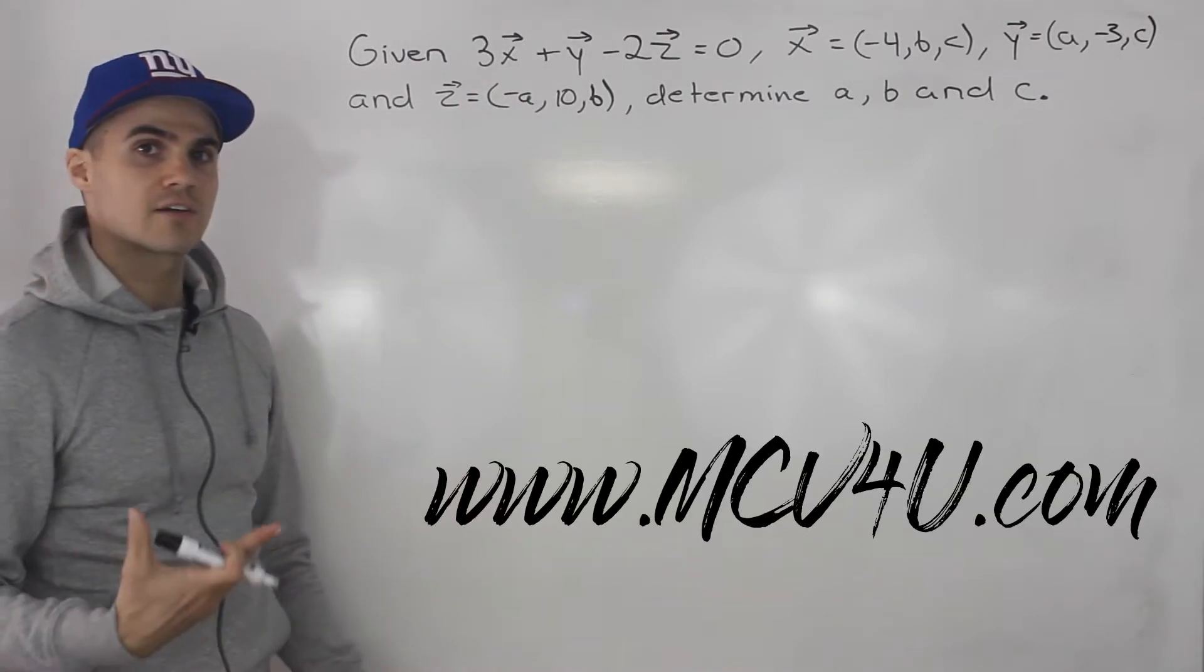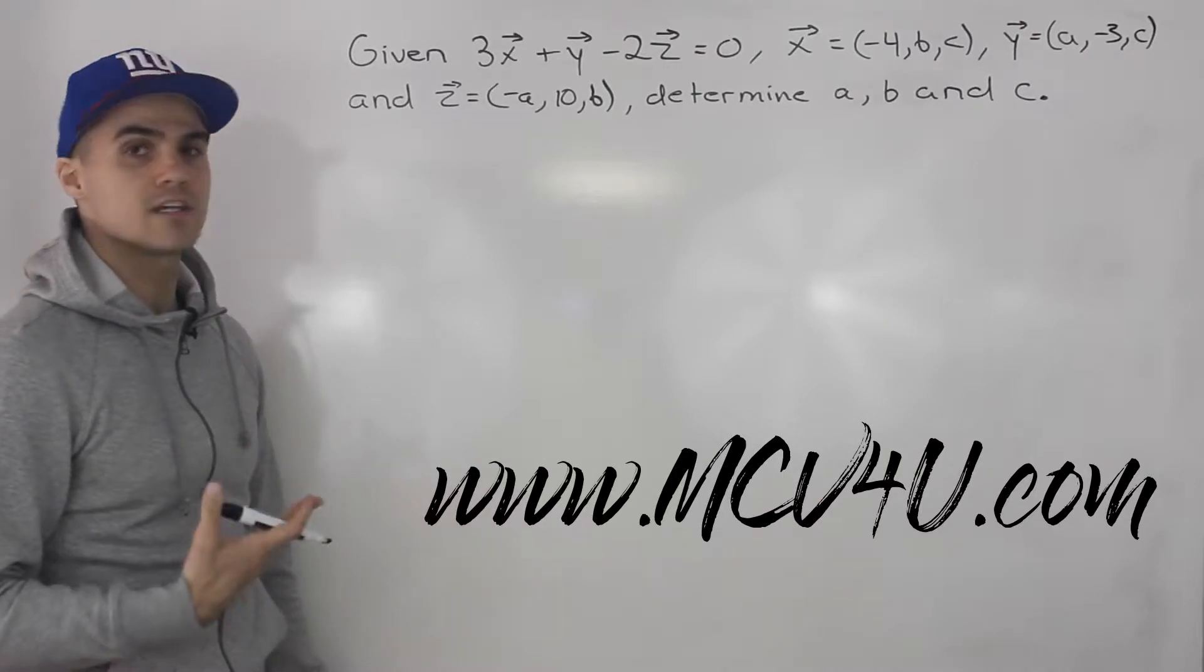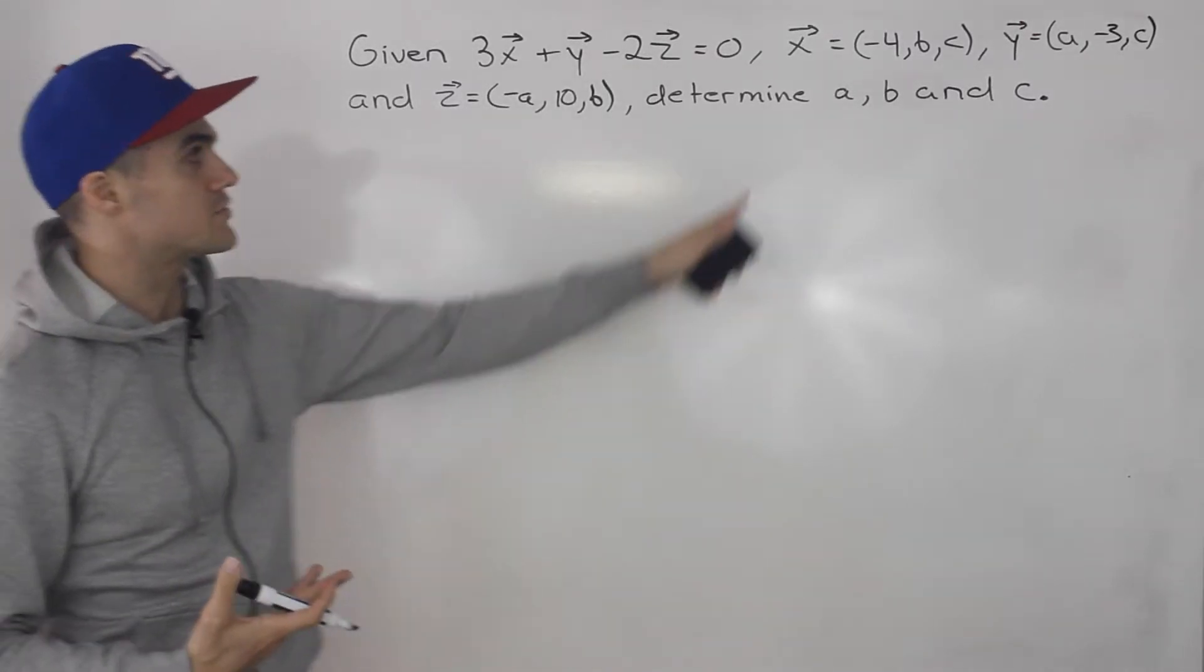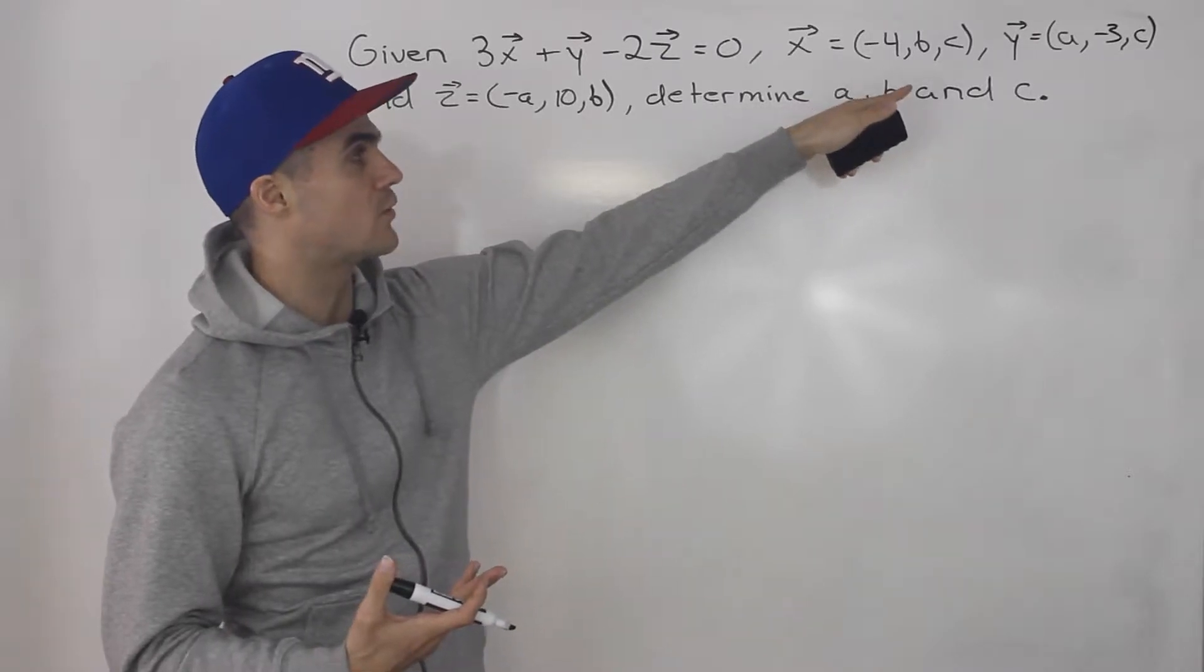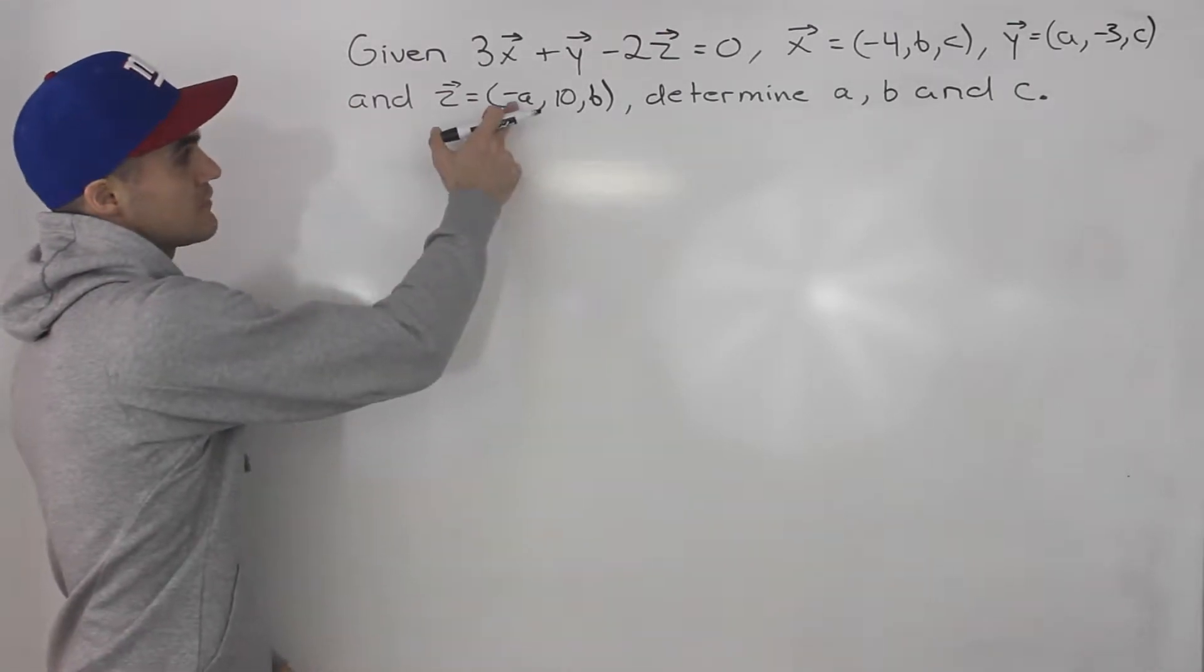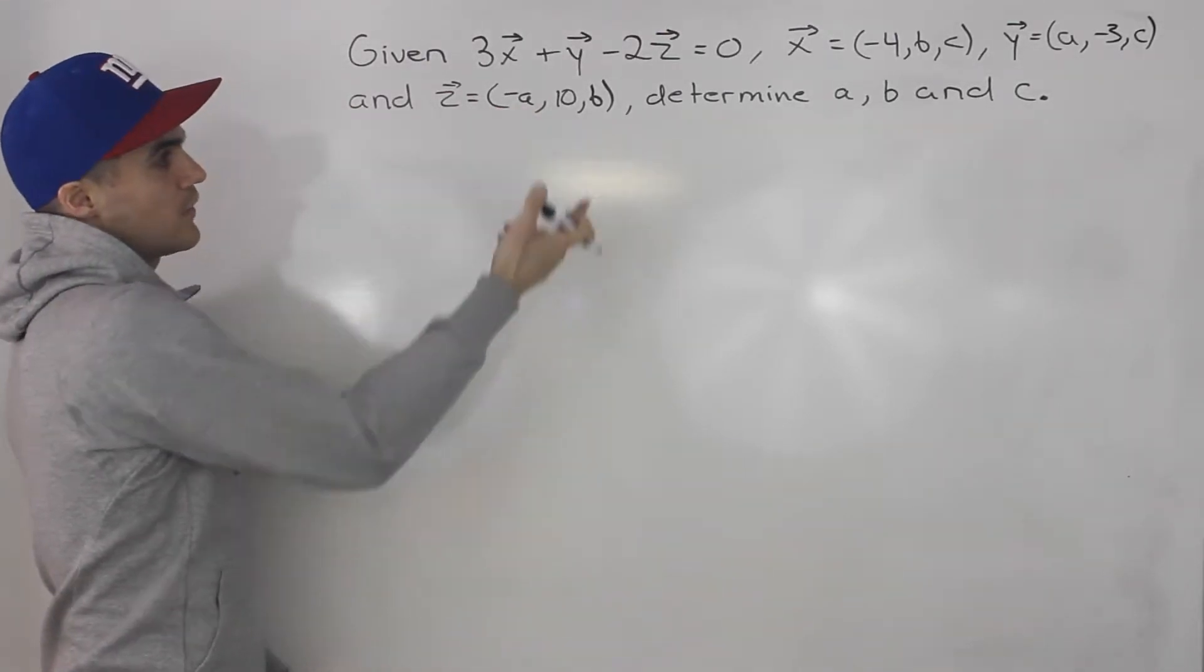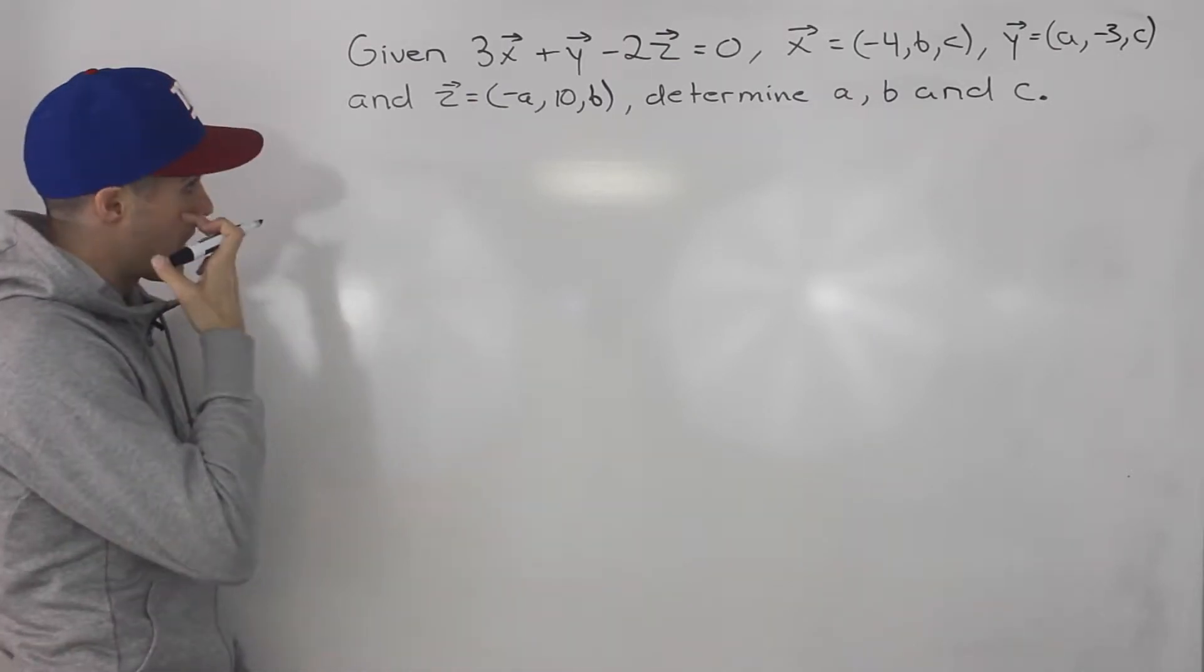Given that 3 times the vector x plus vector y minus 2 times the vector z equals 0, we're also told vector x equals (-4, b, c), vector y equals (a, -3, c), and vector z equals (-a, 10, b). We have to determine the values of a, b, and c.